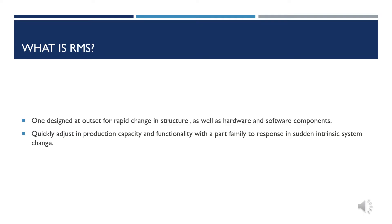Today we are talking on Reconfigurable Manufacturing System. A Reconfigurable Manufacturing System is one designed at the outset for rapid change in its structures as well as in its hardware and software components, in order to quickly adjust its production capacity and functionality within a part family in response to market changes or internal system changes.